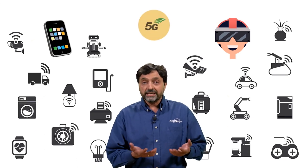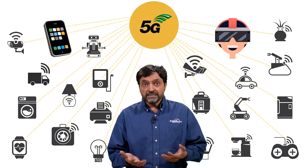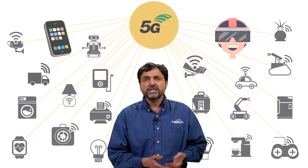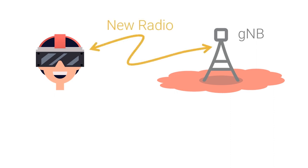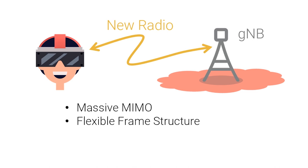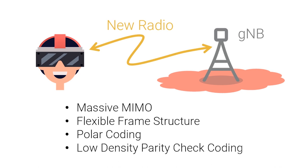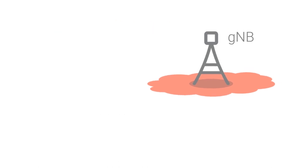How does 5G connect all these devices and support the requirements they have? The 5G base station is called the gNB, or the next generation node B. The device and the gNB use the new radio or NR based air interface. The NR air interface uses features like massive MIMO, flexible frame structure, and advanced channel coding techniques like polar coding and low density parity check coding.